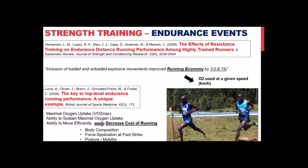Running economy is defined as oxygen used at a given speed. Athletes who did explosive training actually used less oxygen to run the same speed — they were more efficient. For distance athletes, there are basically three ways to improve performance: improve maximal oxygen uptake, improve the ability to sustain maximal oxygen uptake, or improve movement efficiency by decreasing the cost of running.